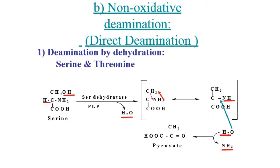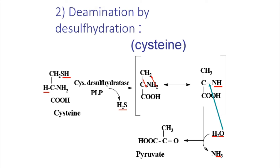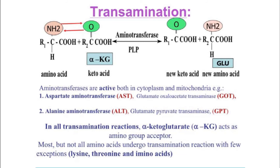The second broad mechanism is non-oxidative (direct) deamination. Amino acids serine and threonine undergo dehydration — removal of water — and are directly converted into pyruvate and ammonia. The pyruvate generated can enter the carbon skeleton and be used for ATP synthesis via the TCA cycle. Another mechanism under this category is deamination by desulfhydration, where the sulfur group is removed, also generating pyruvate and ammonia.